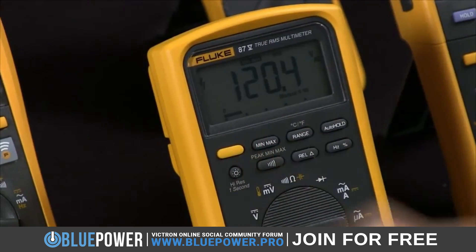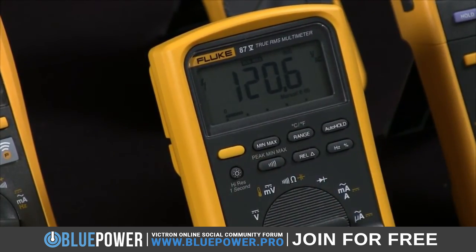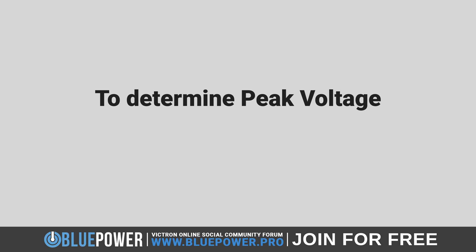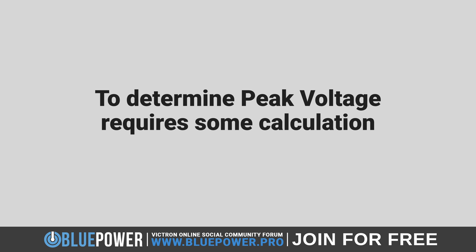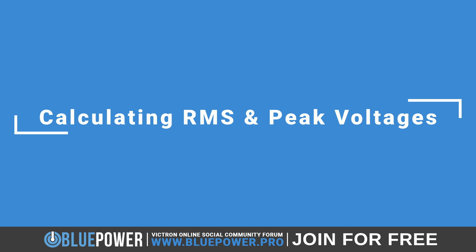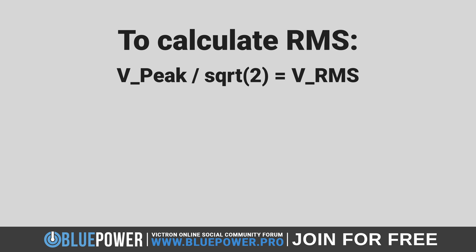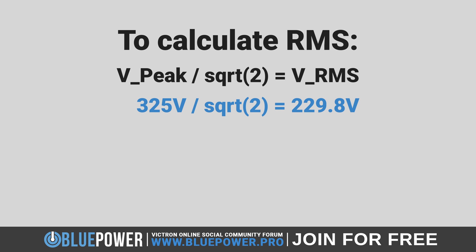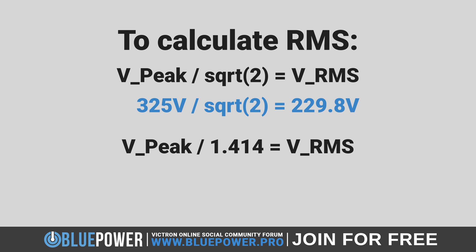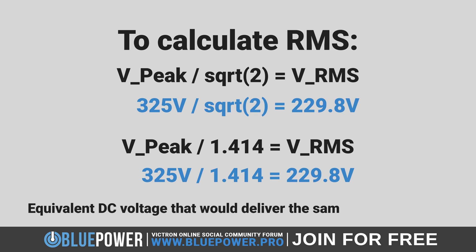Even a true RMS multimeter doesn't typically measure or display peak voltages — it is primarily focused on providing accurate RMS readings, which are more useful for assessing power in an electrical system. If you want to determine the peak voltage, you would need to perform a calculation, assuming a sinusoidal waveform. To calculate RMS from peak voltage: simply divide the peak voltage by the square root of 2. For example, 325 volts divided by the square root of 2 equals 229.8 volts. Alternatively, you can divide by 1.414 — for example, 325 volts divided by 1.414 equals 229.8 volts.